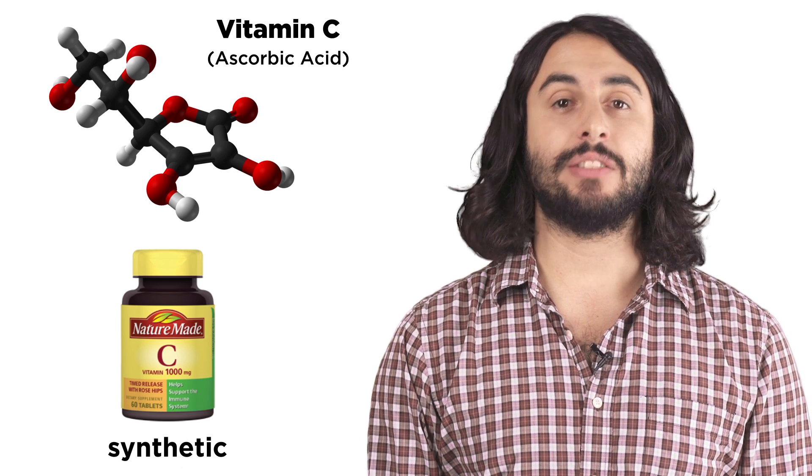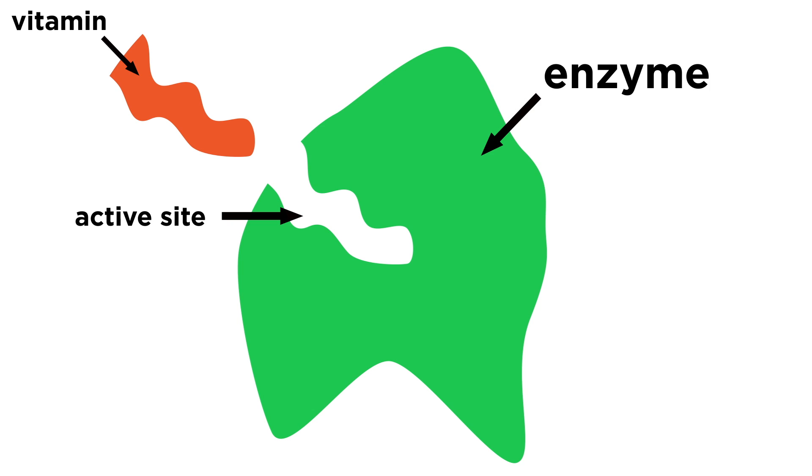To answer that let's look at how a vitamin works. A vitamin has just the right shape to fit into an active site of an enzyme and make interactions that turn on the enzyme, like a lock and key. And just as it doesn't matter who makes your key as long as it's the right shape for the lock, same goes for the vitamin.